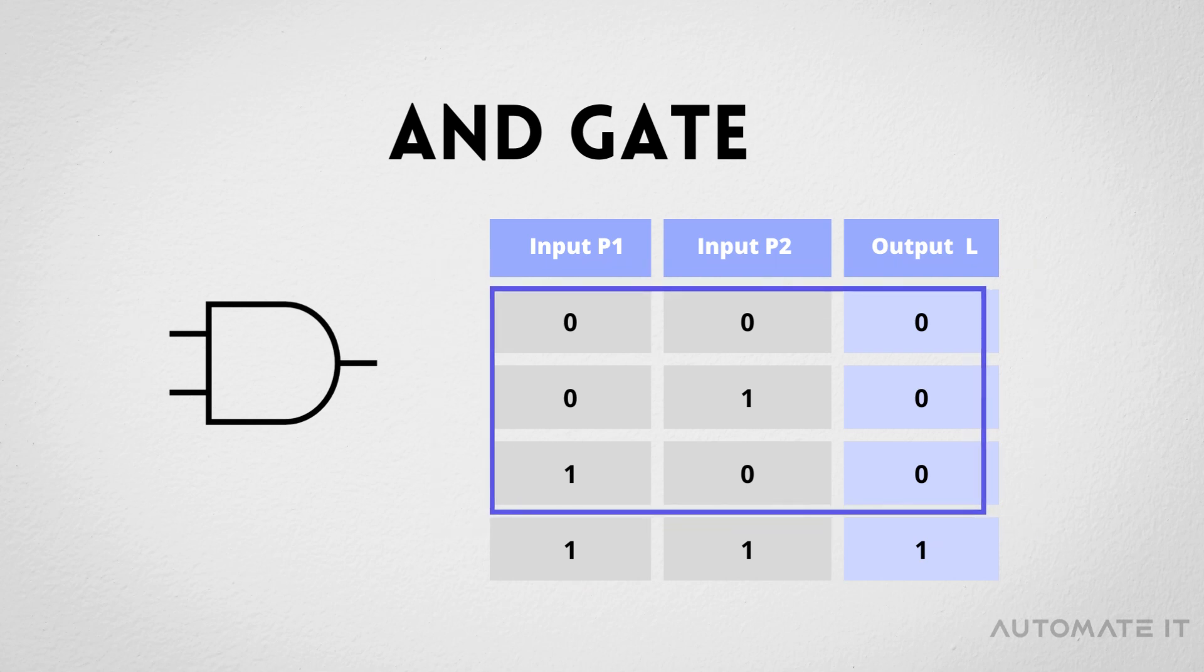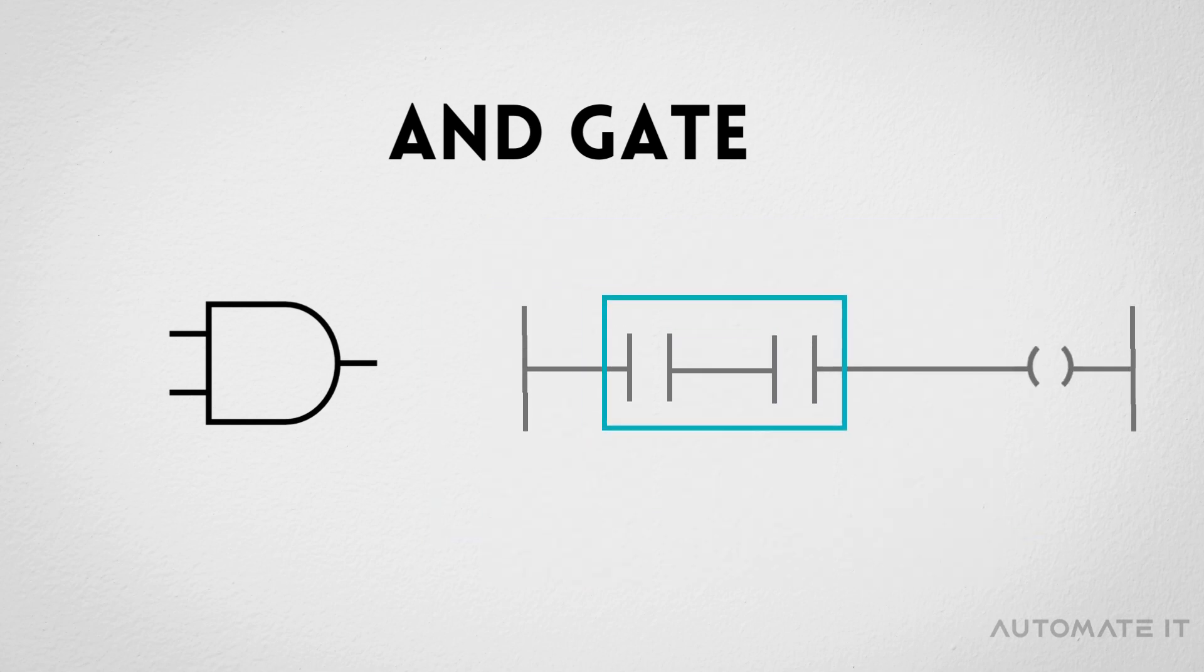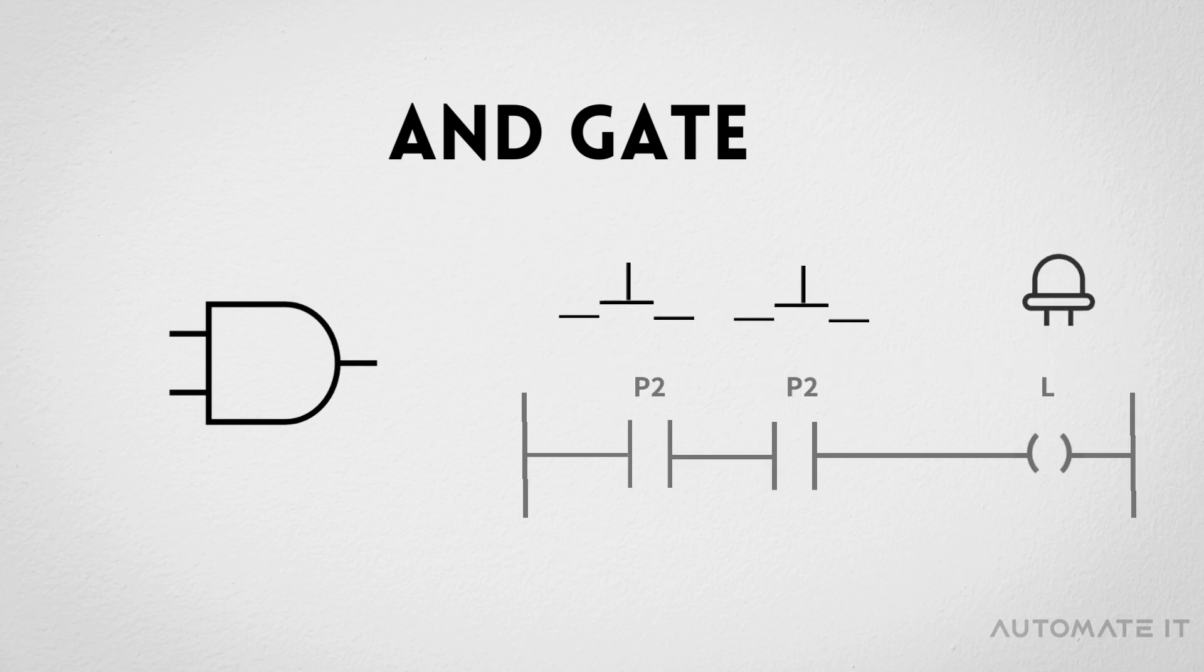AND-GATE can be implemented in ladder logic by connecting normally open contacts of inputs in series. Suppose we have two push buttons as inputs and a lamp as output. When both push button P1 and P2 are pressed, which means that both inputs are on, then and then only, output goes high.